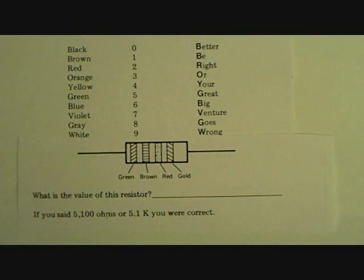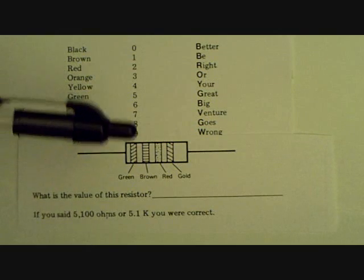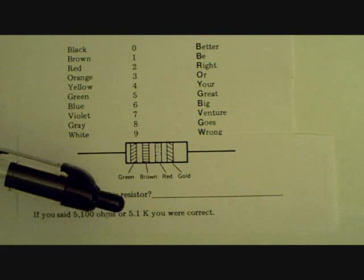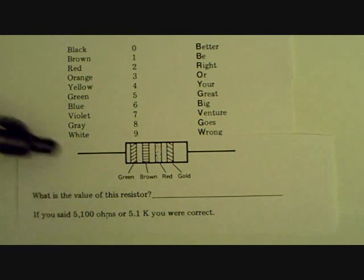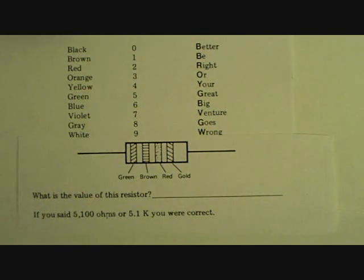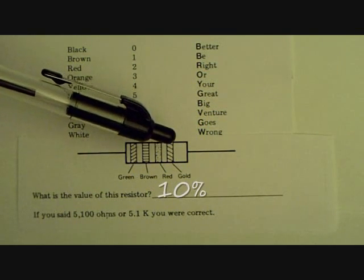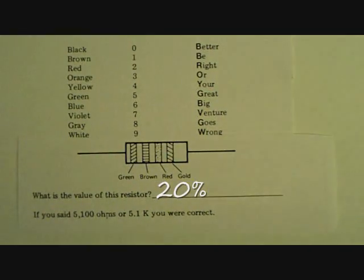Let's try this resistor — it's green, brown, red. Looking at the chart, green is 5, brown is 1, and red is 2, so it's 5, 1 plus 2 zeros, or 5.1 kilohms — 5,100 ohms. It's pretty easy. We're showing a gold band here, which is a tolerance of 5%. If that band is silver, the tolerance is 10%, and if there's no band, it's a 20% tolerance.